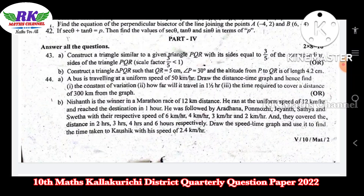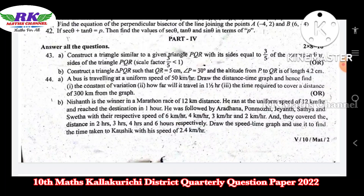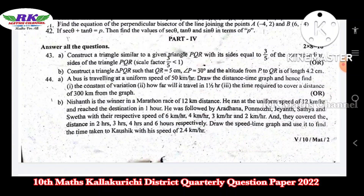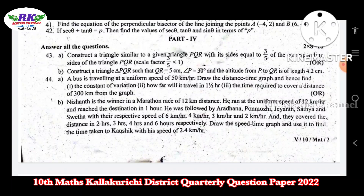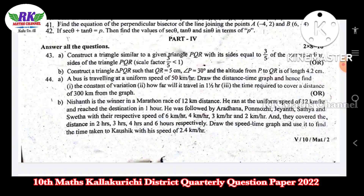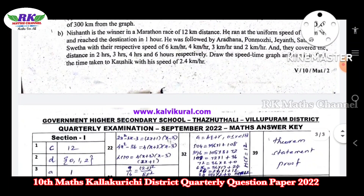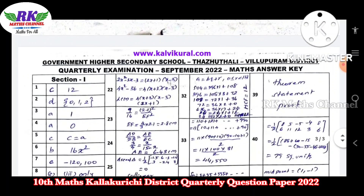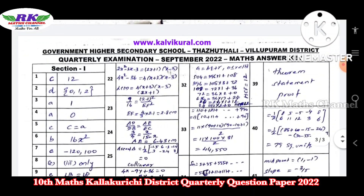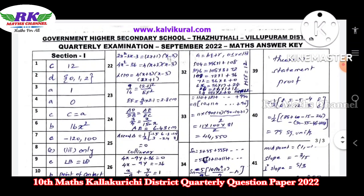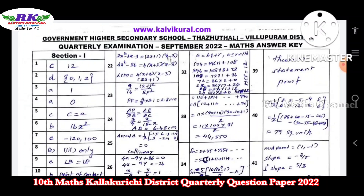Question number 44 is a graph of variation problem. We will see a total of 10 problems. If you look at the answers, we will go through the answers to your questions.